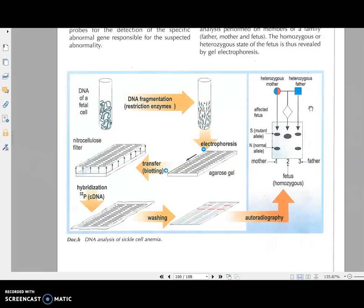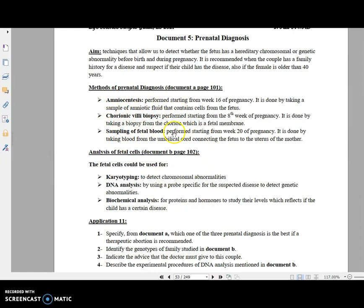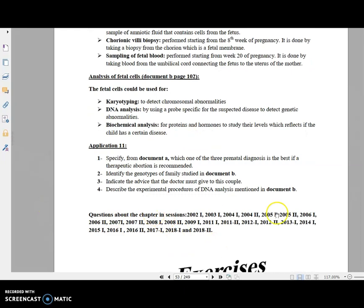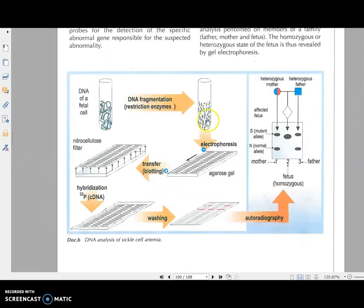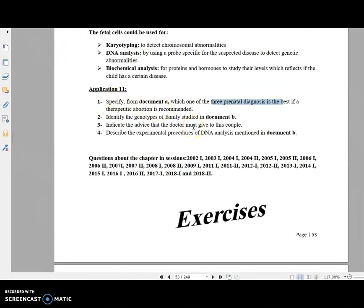By making fingerprinting, we add probe specific for the certain disease. According to the probe, we can determine whether this individual or fetus has an abnormality or not. The aim of these techniques - you only have to know names in general, how to use karyotyping and DNA analysis. In application 11, specify which of the three prenatal diagnosis is best for therapeutic abortion. The answer is chorionic villi biopsy because it's the earliest technique that gives cells of the baby. You can solve the remaining questions, and next time we are going inshallah to solve more questions about this chapter.